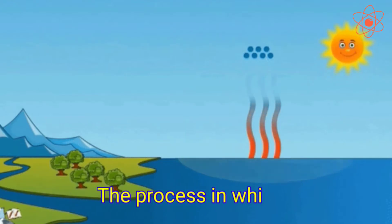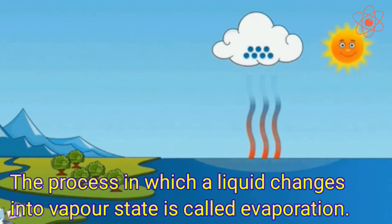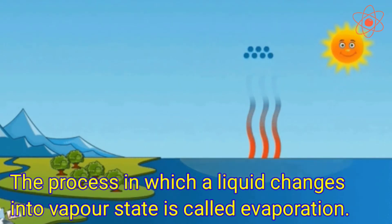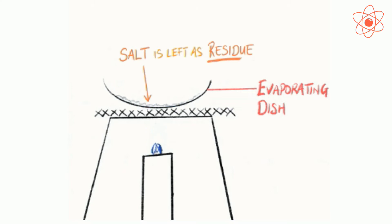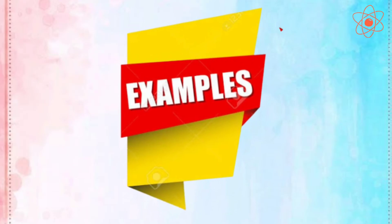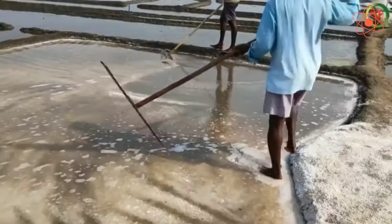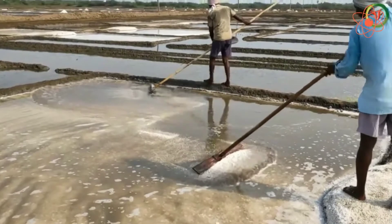Let us understand evaporation. The process in which a liquid changes into vapour state is called evaporation. This process is used to remove soluble solids from their solutions in water. For example, separation of salt from sea water.